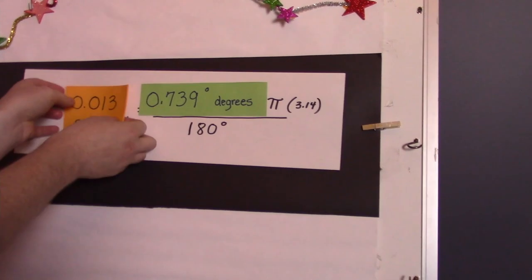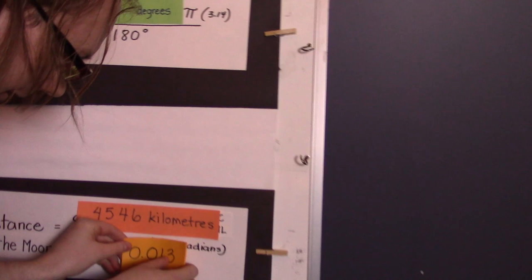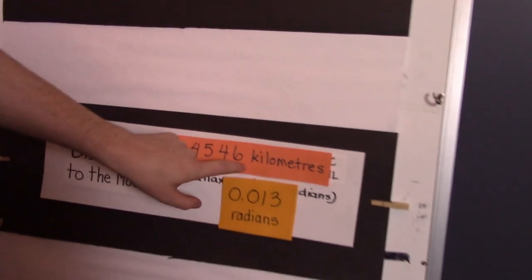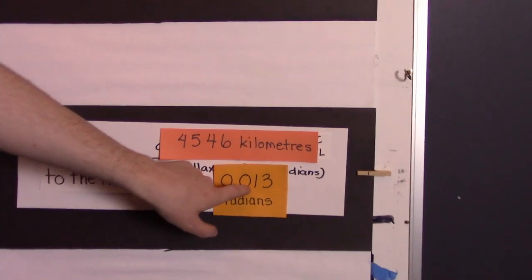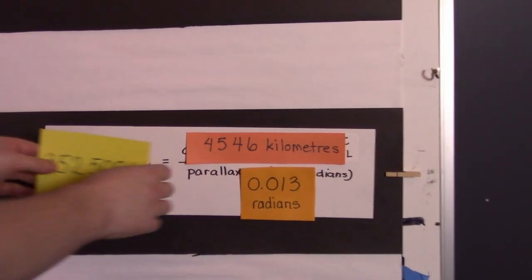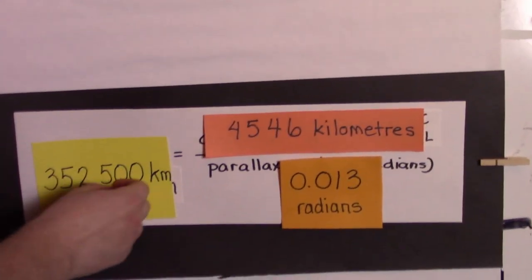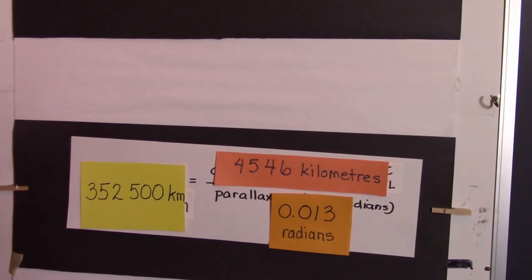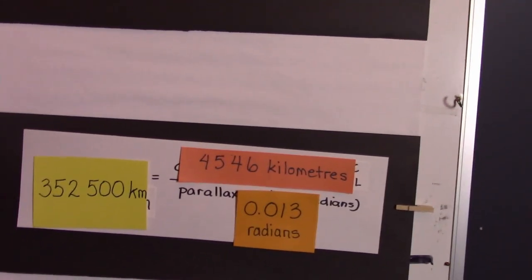And just like before, I can take this out of this one, plug it into this formula, and we take our 4,546 kilometers, divide that by 0.013 radians, and what I got was 352,500 kilometers. So that's the distance from the Earth all the way to the Moon.